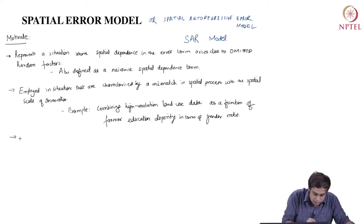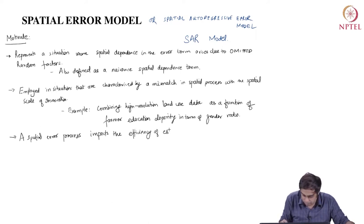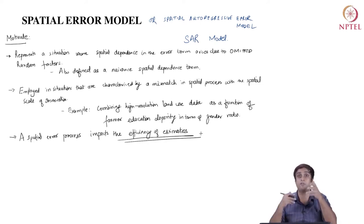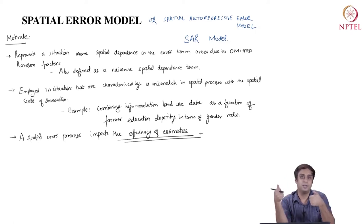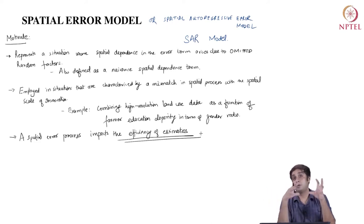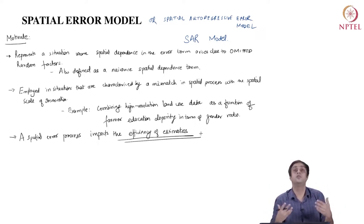A spatial error process impacts the efficiency of estimates. Earlier, we saw that a spatial lag version led to bias in the estimates. Here, there will be no bias — we have seen the reasons why there is no bias with spatial dependence in the error term. We saw that with a more restricted form, and now we have a much more general form using the spatial lag notation.